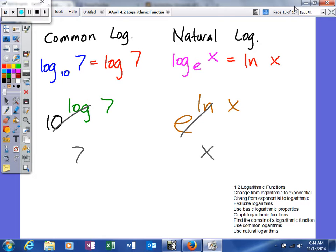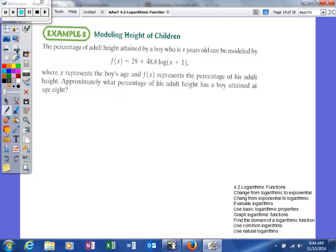Let's look at some real world examples that use both of these. The percentage of adult height obtained by a boy who is x years old can be modeled by that function right there, where x represents the boy's age and f(x) represents the percentage of his adult height.